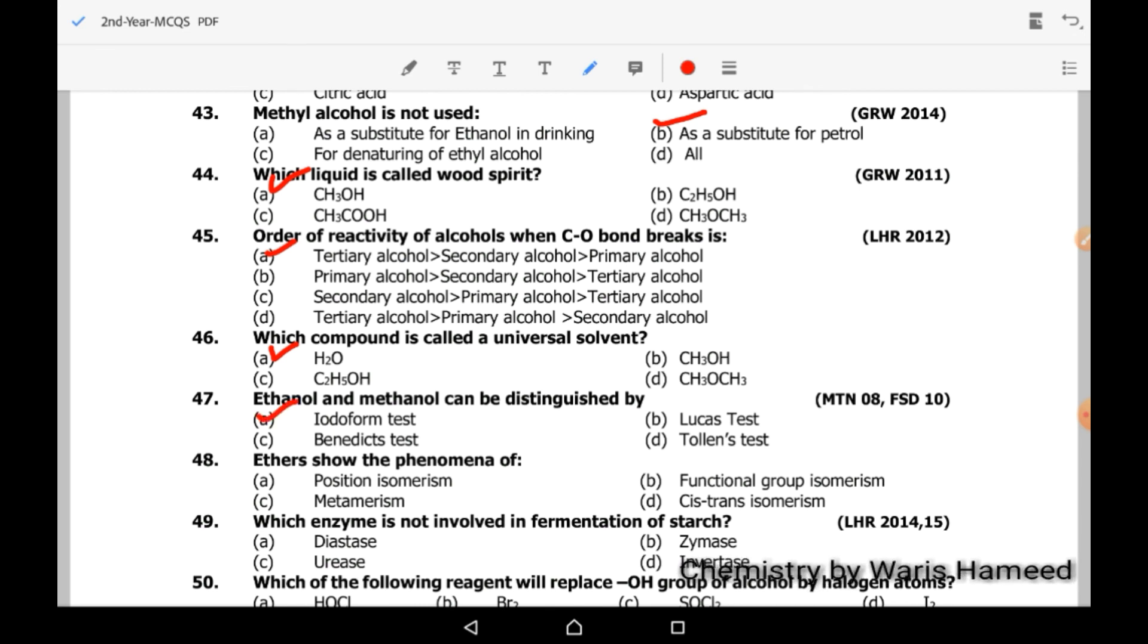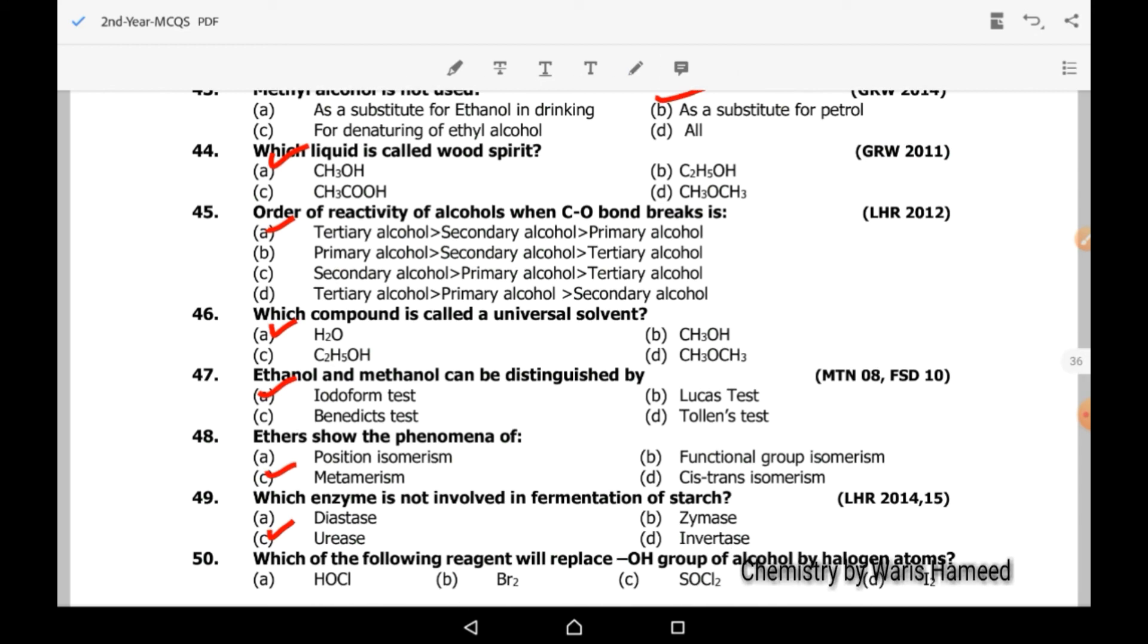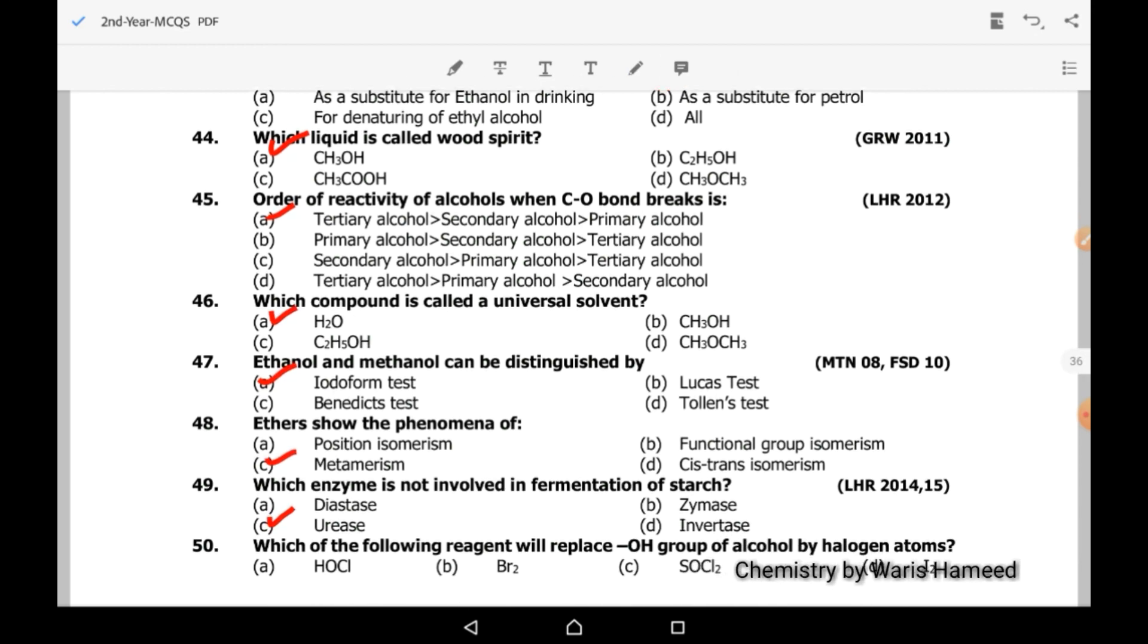Ethers show a phenomenon of metamerism. Which enzyme is not involved in the fermentation of starch? It is urease. Which of the following reagent will replace hydroxyl group of alcohol by halogen atom? It is thionyl chloride SOCl2.